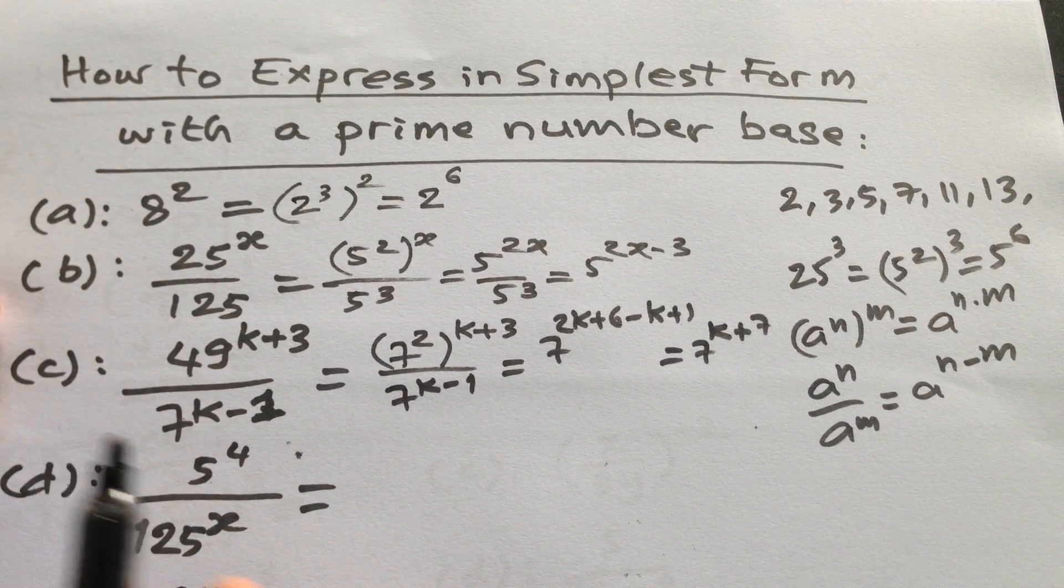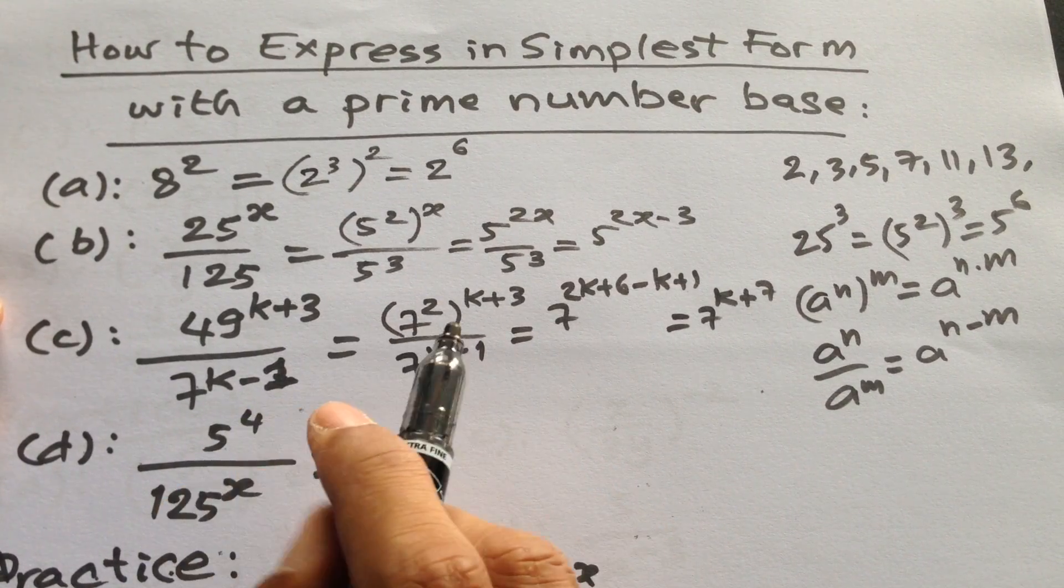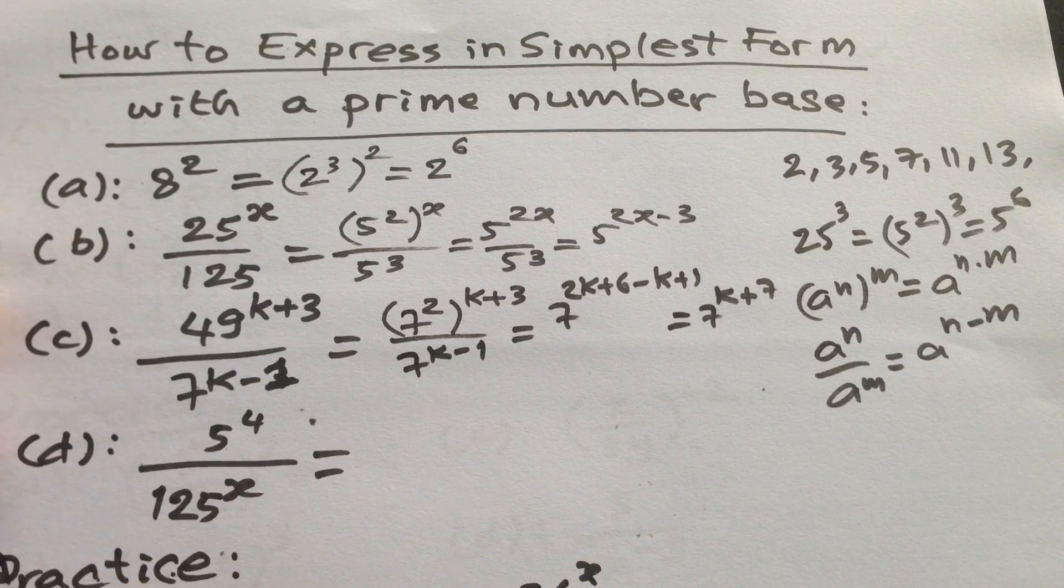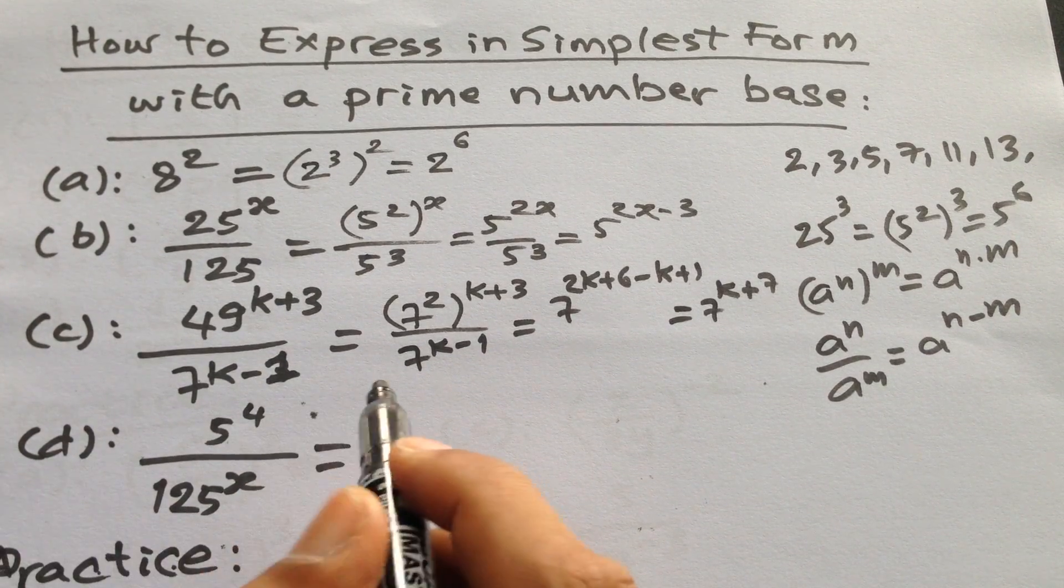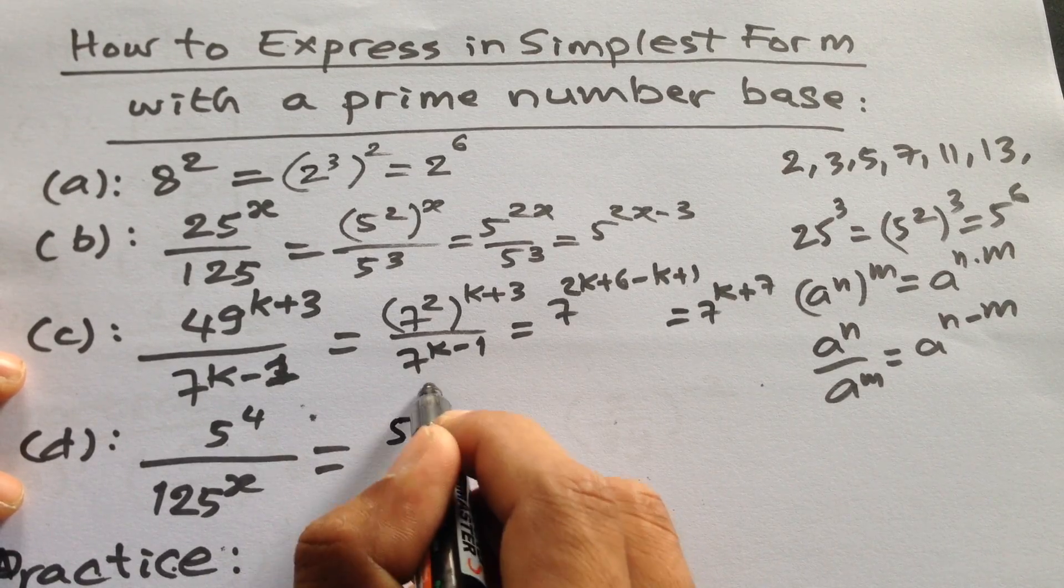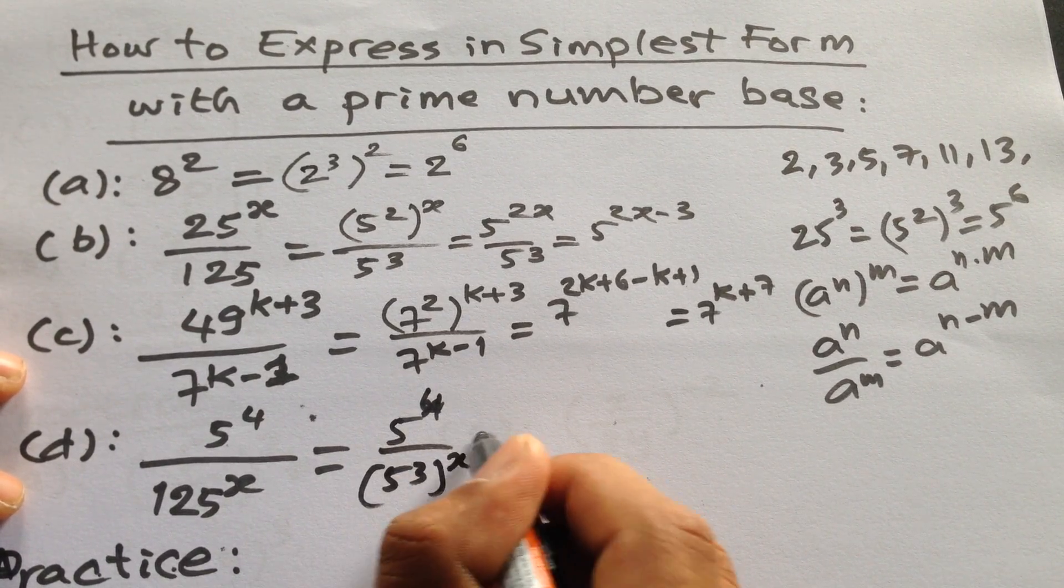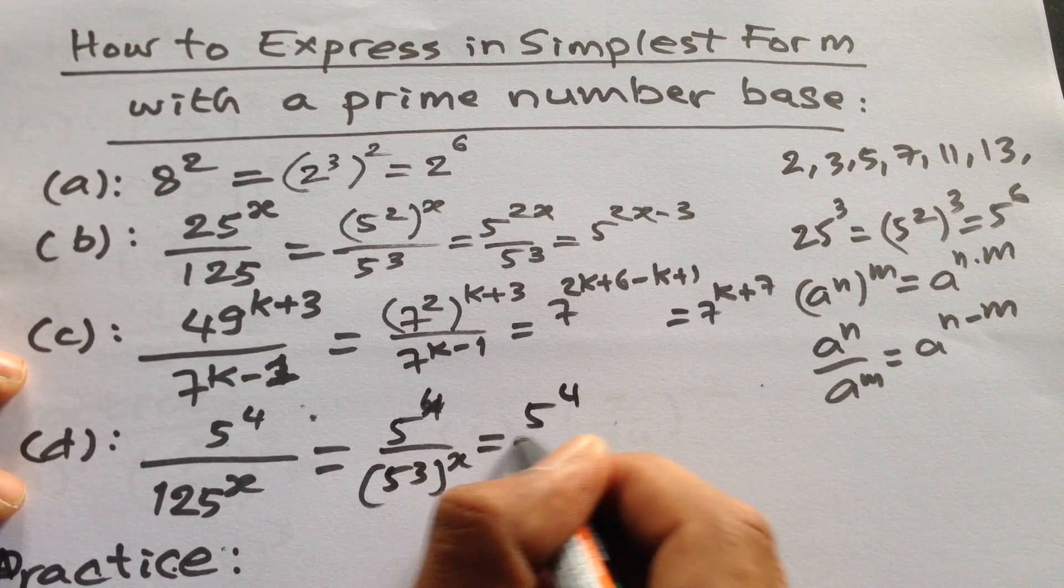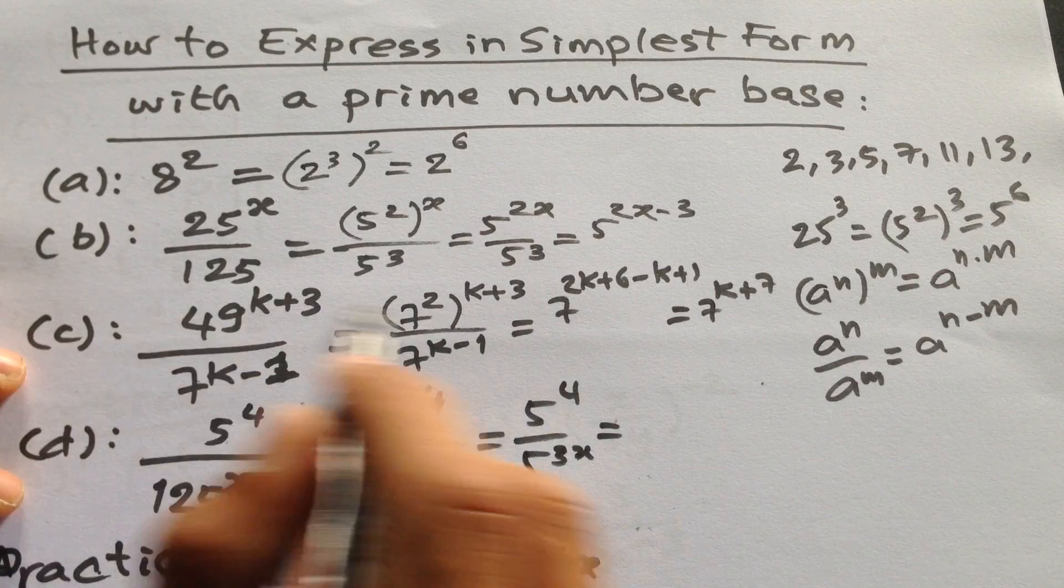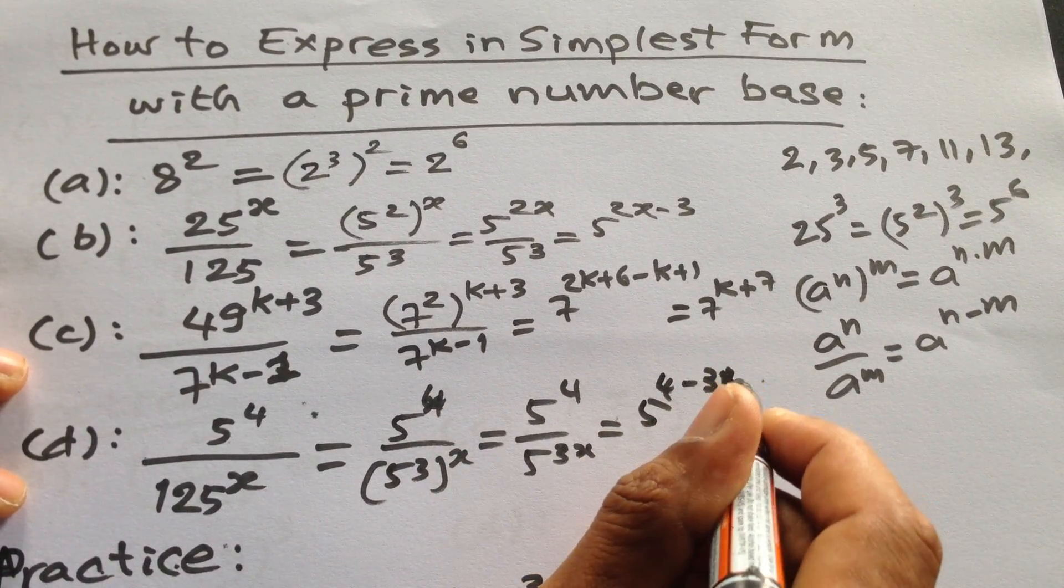For problem (d), the base is a prime number. We have 5 to the power 4 divided by 125 to the power x. Since 125 equals 5 cubed, this is 5 to the power 4 divided by 5 to the power 3x, which equals 5 to the power 4 minus 3x.